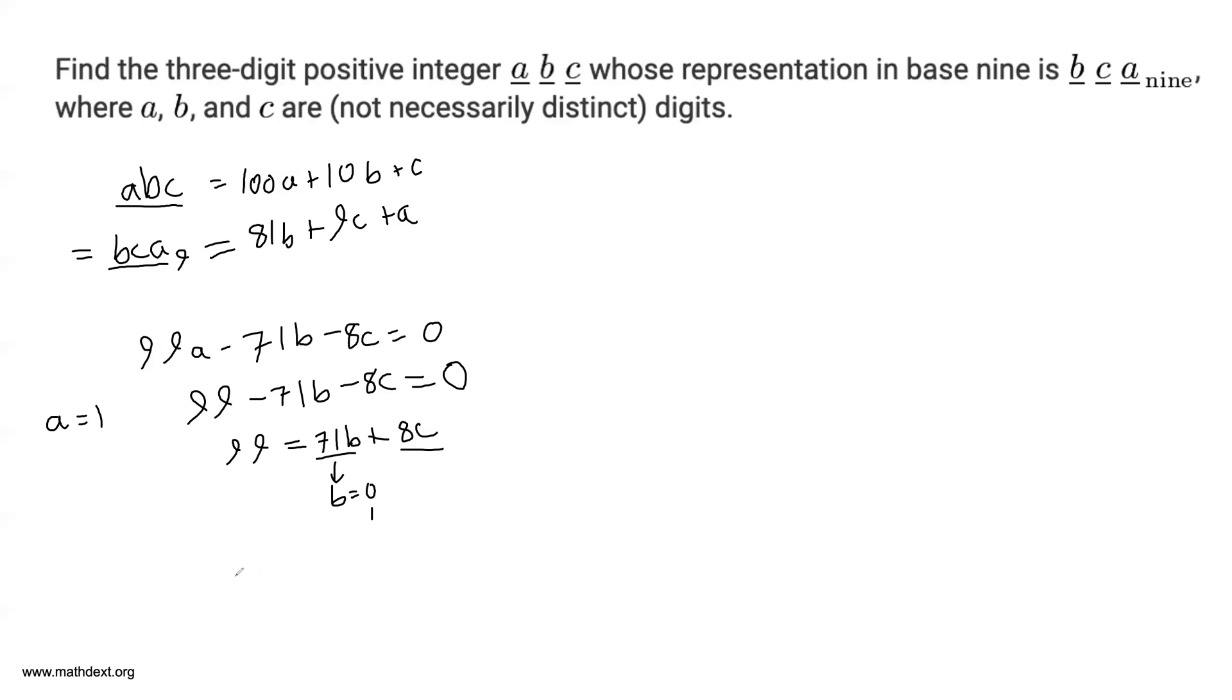So what that means is you have, well, if B equals 0, then you'd have 99 is equal to 0 plus 8C. Doesn't give you any integer solutions for C.